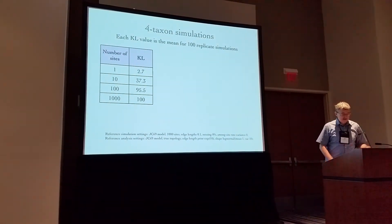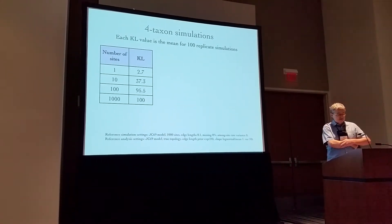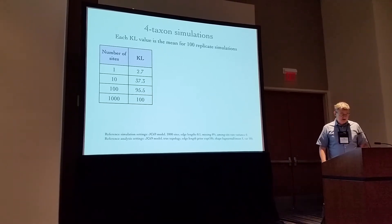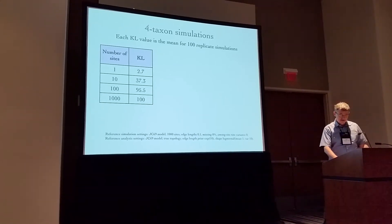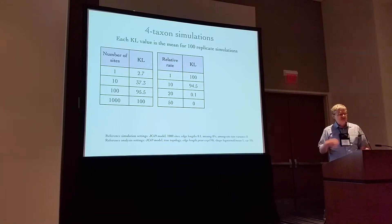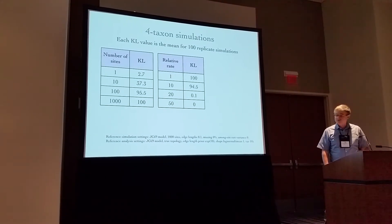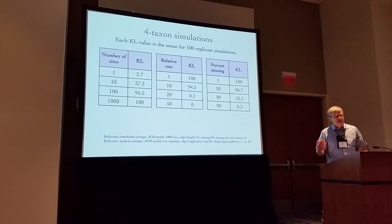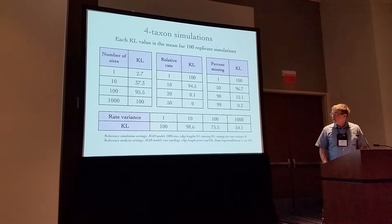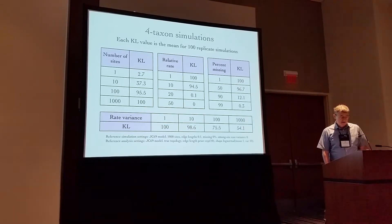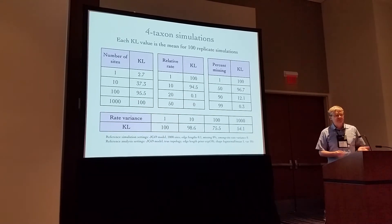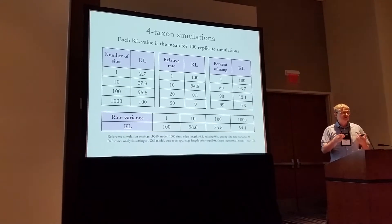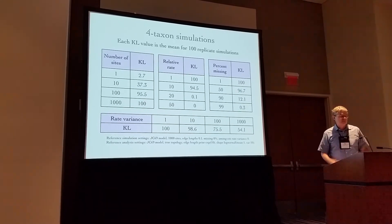A few simple four-taxon simulations illustrate that KL works as expected as a measure of topological information content in many contexts of interest to systematists. Information increases with the number of sites, decreases as sites become noisier with higher substitution rates, goes down as the proportion of missing data increases, and also decreases as among-site rate heterogeneity increases — because high rate heterogeneity means a few sites are evolving very fast and noisily with no information, while most sites evolve very slowly and are largely constant sites with little information.